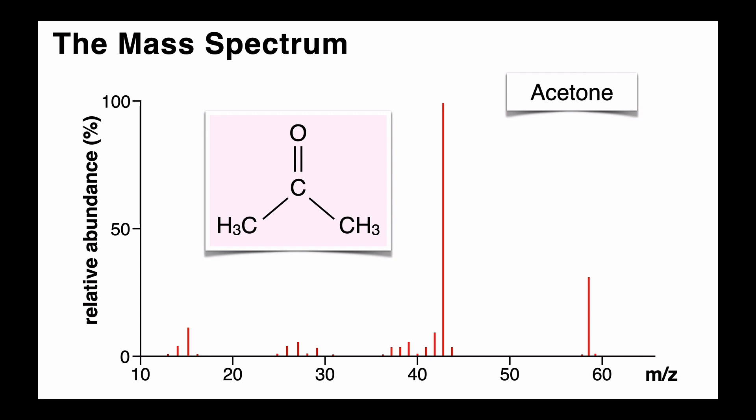The big peak at the highest mass represents the radical cation, that is simply the positive molecular ion of acetone. The peaks in the other regions represent smaller molecular fragments that come from fragmenting the acetone molecule in different ways.